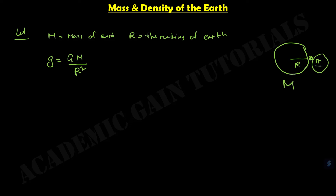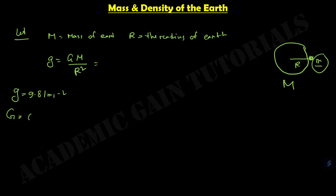From that, if I put in all the values: we know the value of small g is 9.81 meters per second squared — that is the standard value of small g. The value of gravitational constant G is 6.67 into 10 to the power negative 11 newton meter squared kg inverse 2. And the radius of our Earth, R, equals 6.37 into 10 to the power 6 meters.